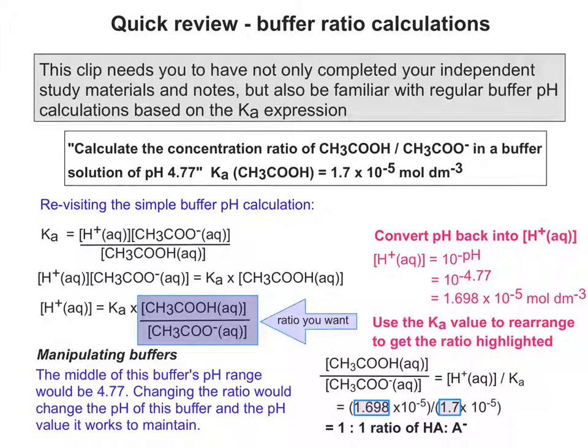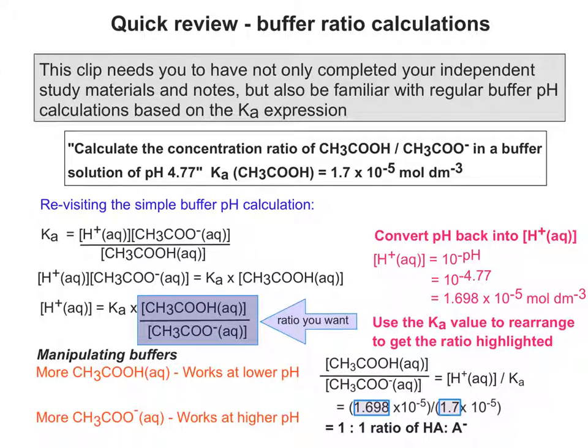So we could manipulate the buffer to work at different places in that pH range by changing the ratio of our weak acid and the conjugate base. So in other words, if you add more weak acid, the buffer works at a lower pH. And if you add more conjugate base instead, it works at higher pH.